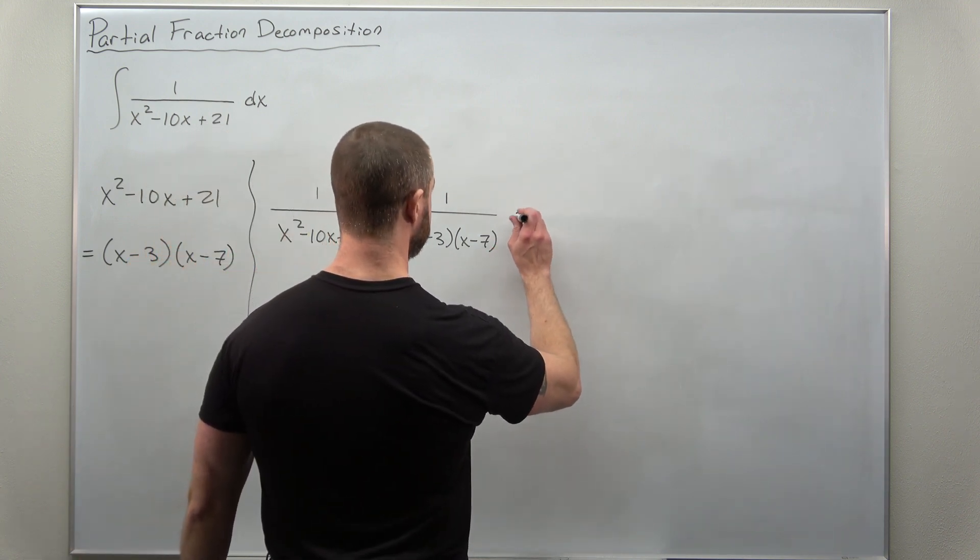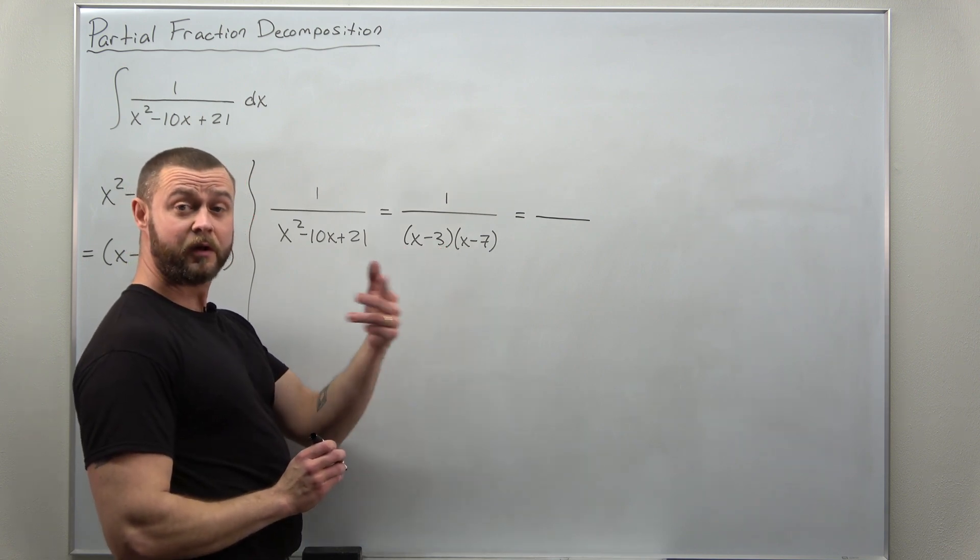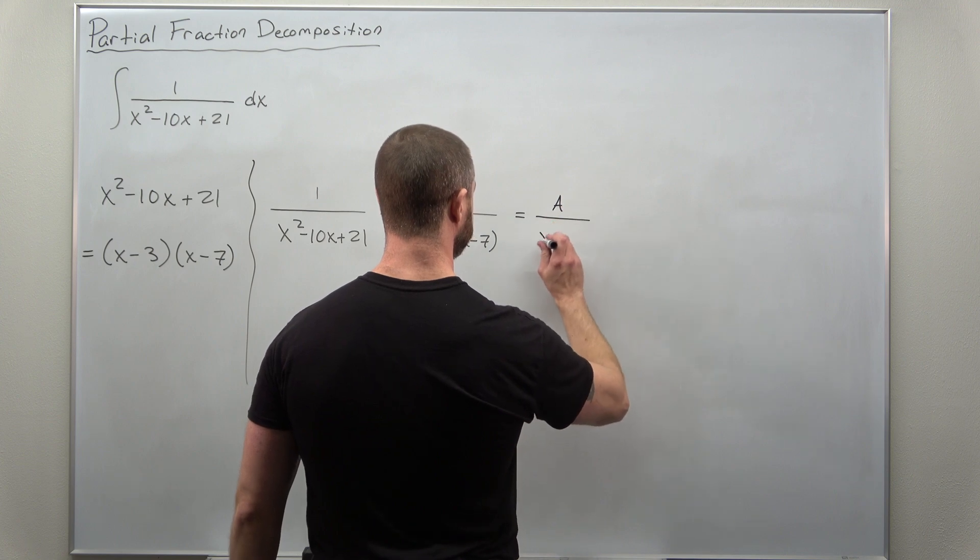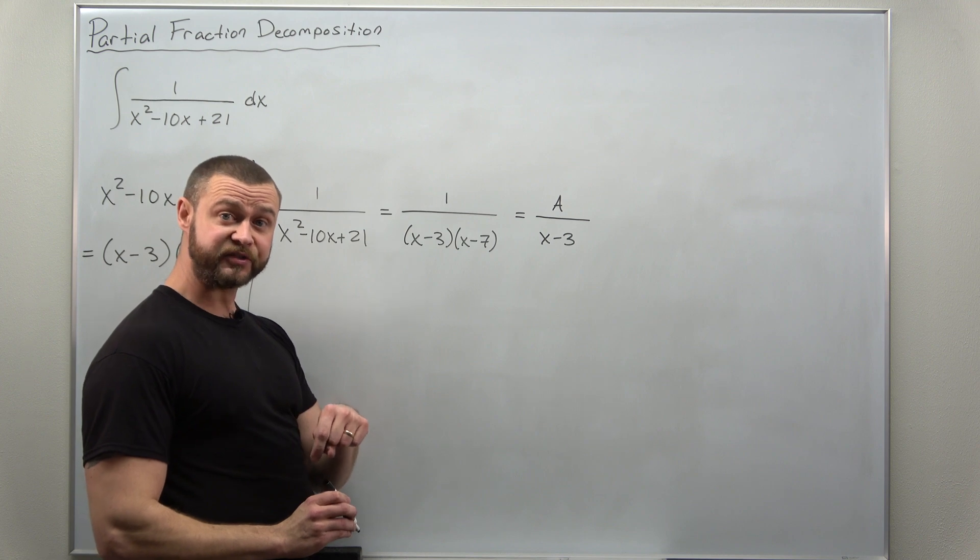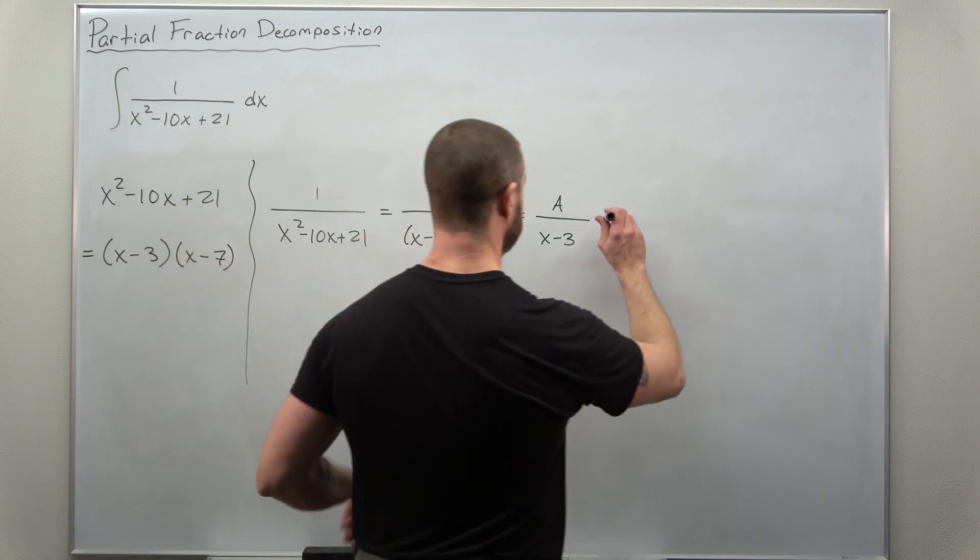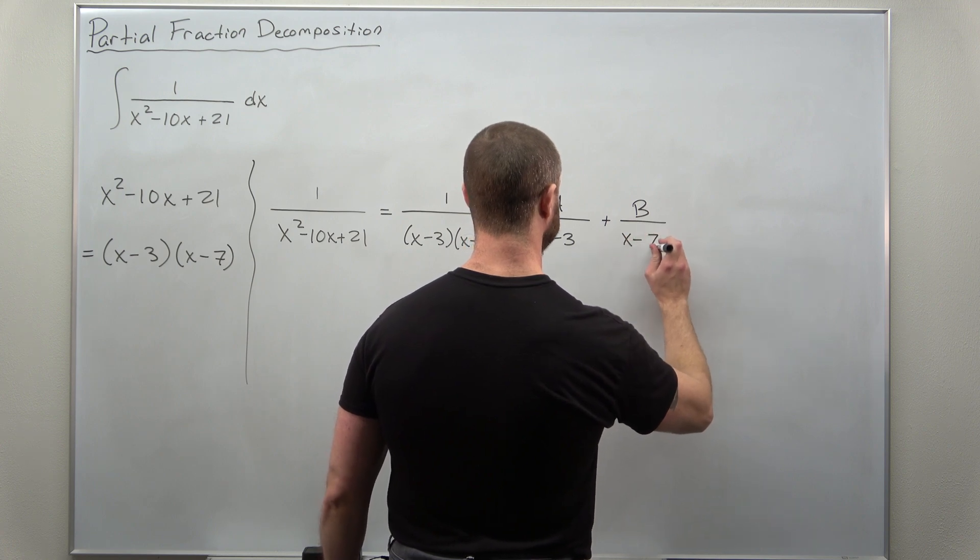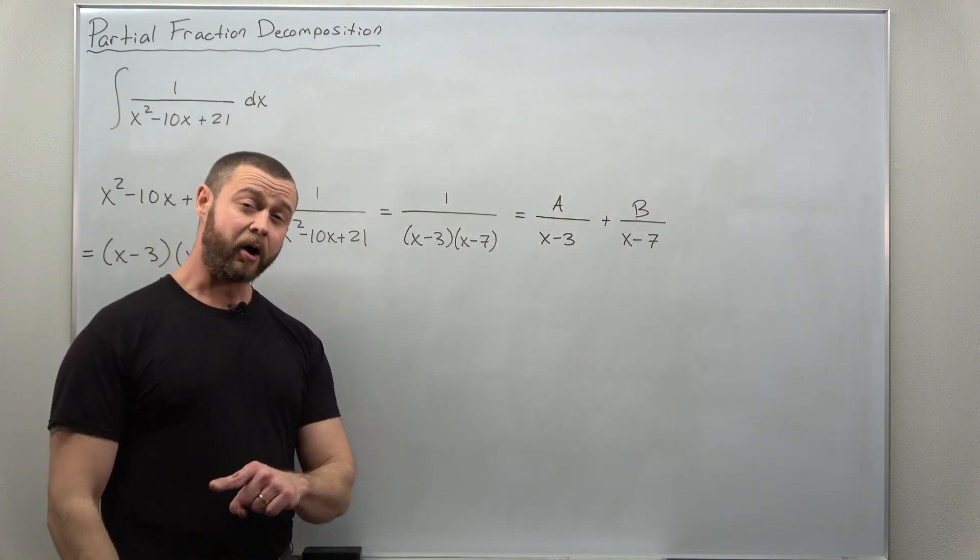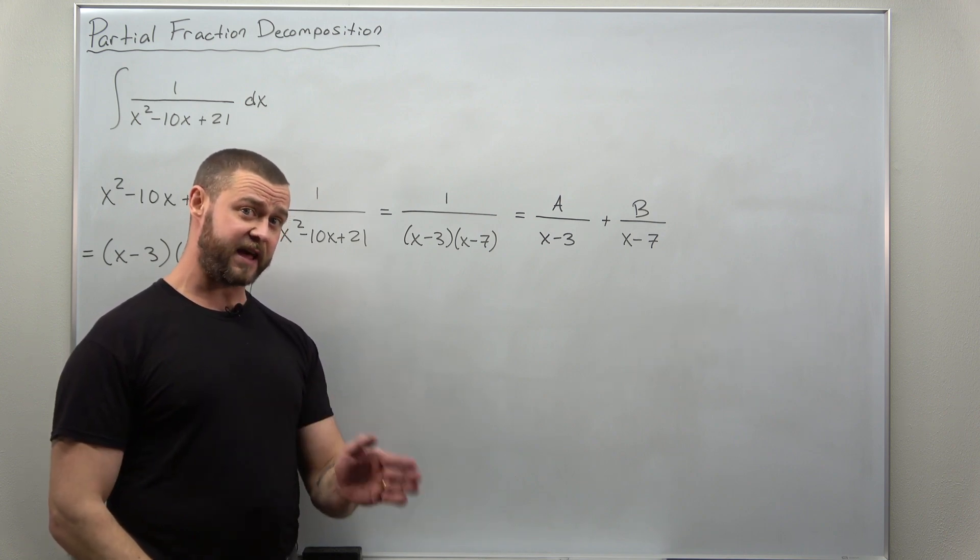Now for linear factors, the partial fractions that we get look like a constant divided by the linear factor. So here for our first factor we'll get a partial fraction A divided by x minus 3. And then for our next linear factor we get another constant, we'll say B over the linear factor which is x minus 7 here. Now our goal is to solve for the numerical values of A and B.